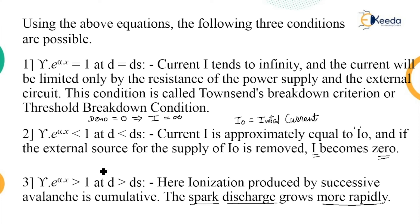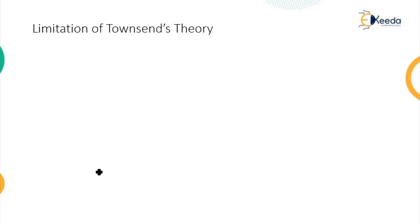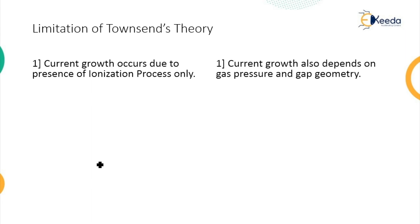There are basically three limitations to Townsend's theory. First, the current growth depends only on the primary and secondary ionization process, but actually that also depends on the gas pressure and the gap geometry, that is the electrode geometry.